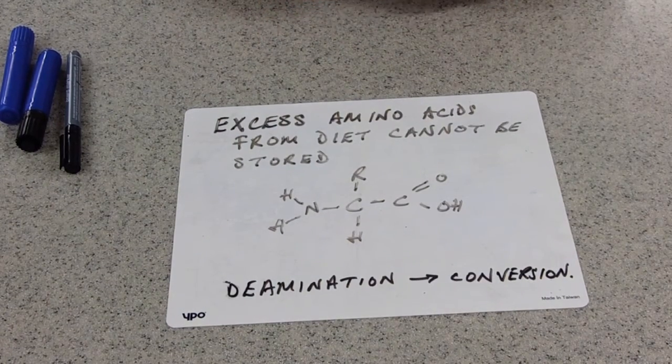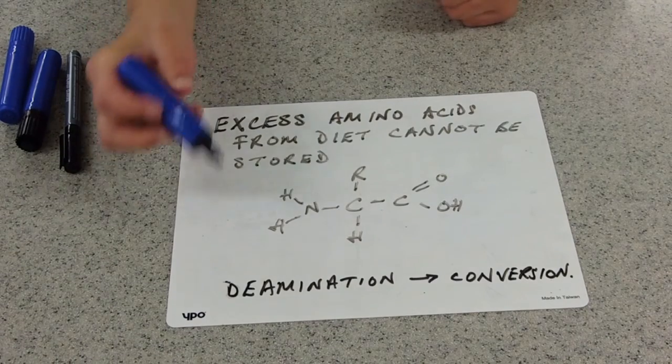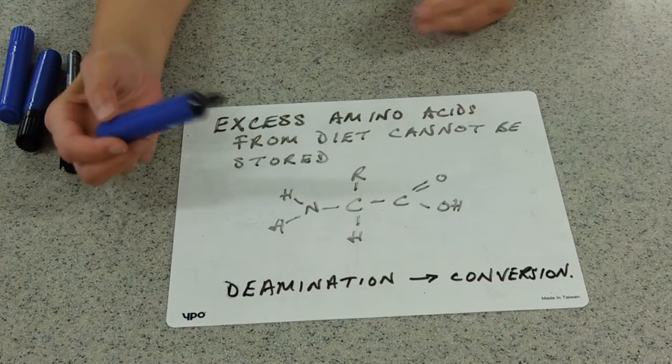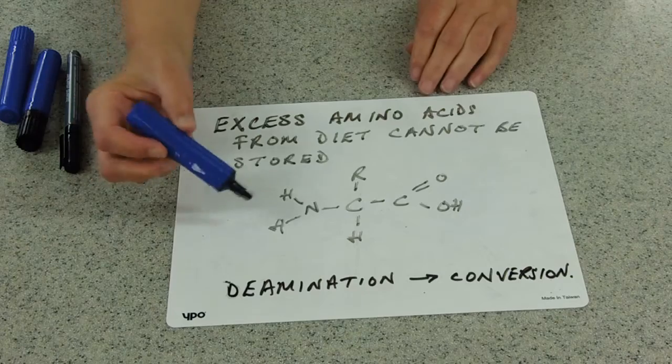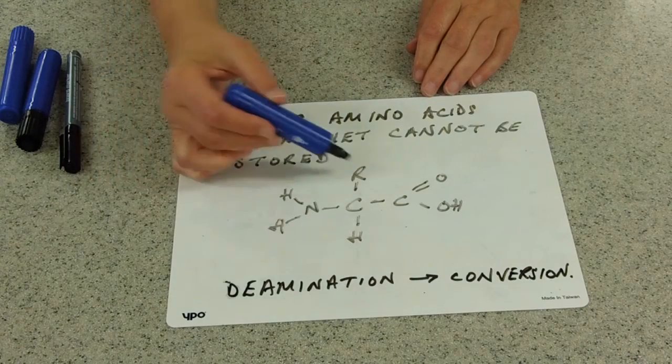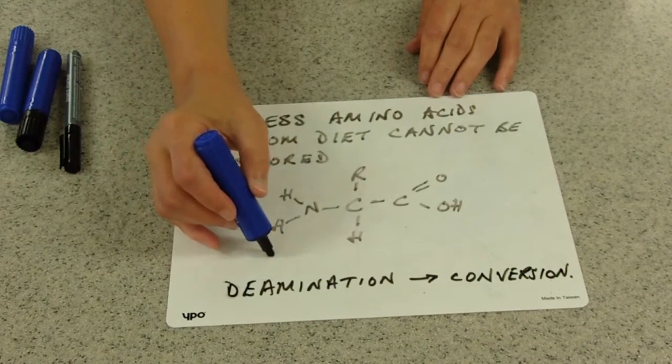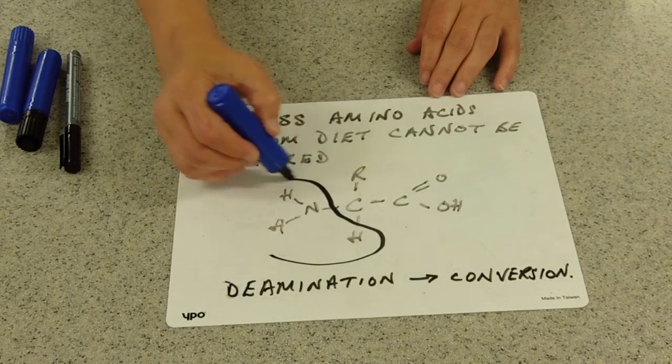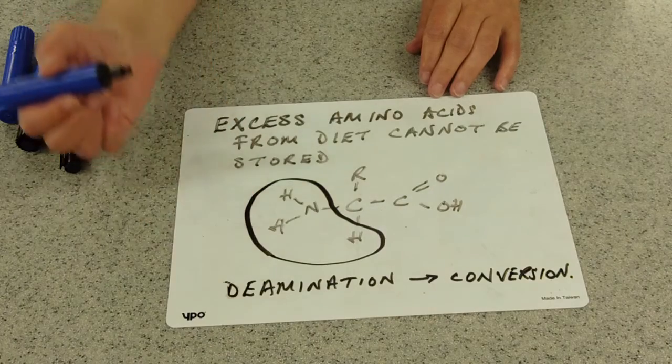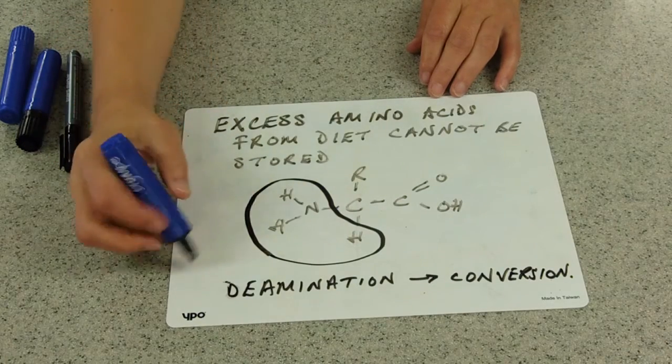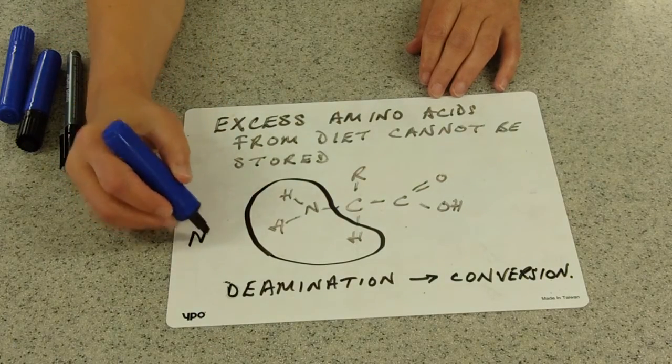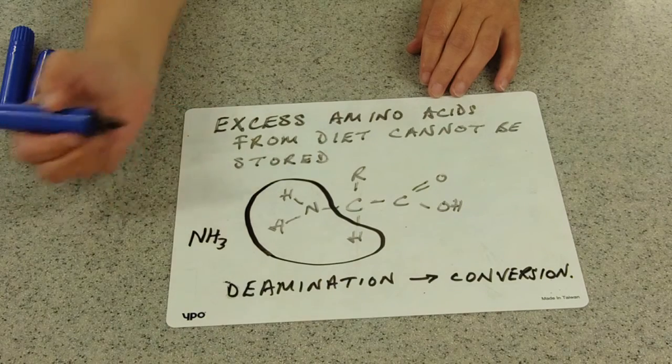And the deamination reaction, just reminding you here of the structure of an amino acid. We've got an amino group, this variable R group, the acid group and the hydrogen. So deamination really involves taking away the amino group and a hydrogen to make ammonia.